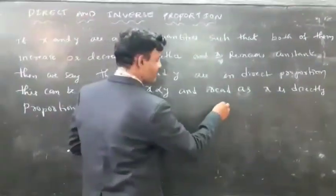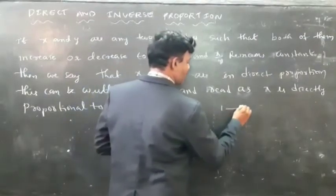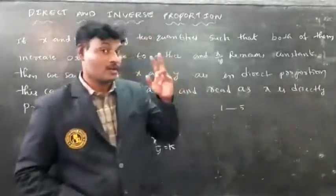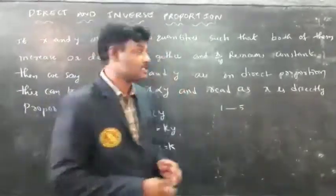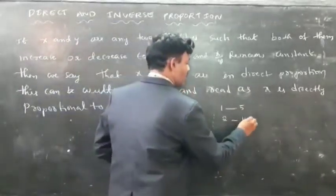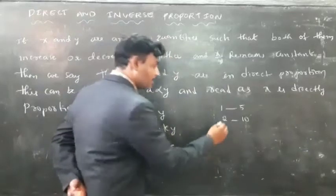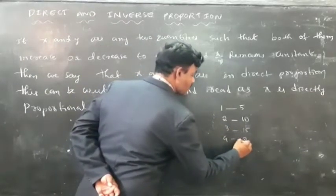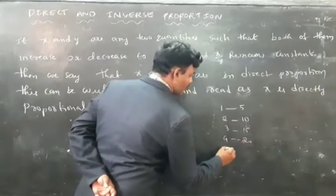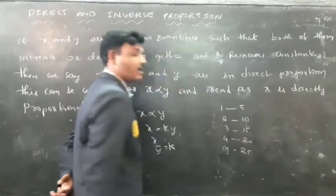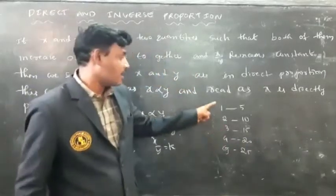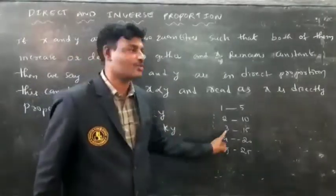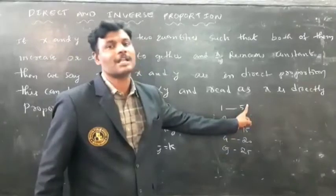The cost of one ball is five rupees, cost of two balls is ten rupees, cost of three balls is fifteen rupees, cost of four balls is twenty rupees, cost of five balls is twenty-five rupees. Here, what did you observe? The number of balls is increasing and also the cost of those balls is also increasing.